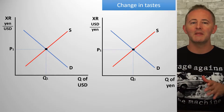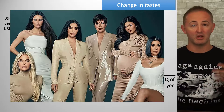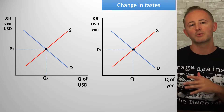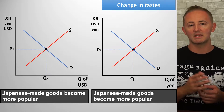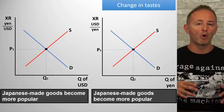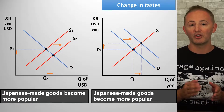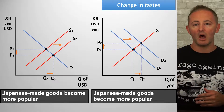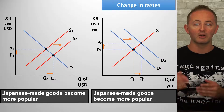Suppose that Japanese-made stuff suddenly becomes wildly popular in the U.S. Americans are buying more Japanese goods. Our next job is to decide how this impacts each currency. Well, for Americans to get more of that anime, they'll demand more yen, shifting the demand curve for yen to the right. And in order to get those yen, they have to supply more U.S. dollars to the foreign exchange market, shifting the supply curve for the dollar to the right.